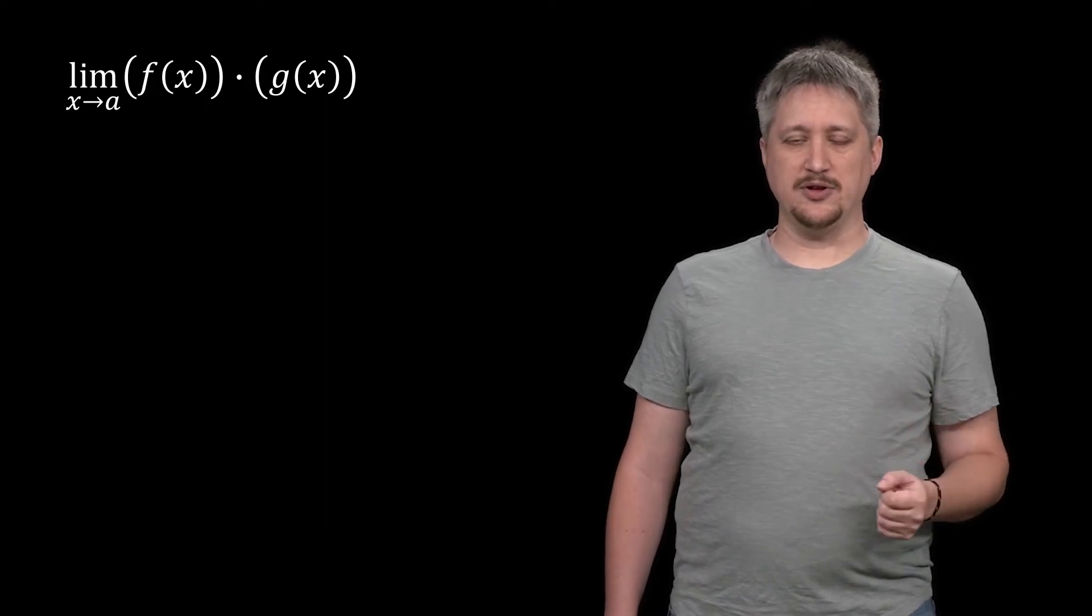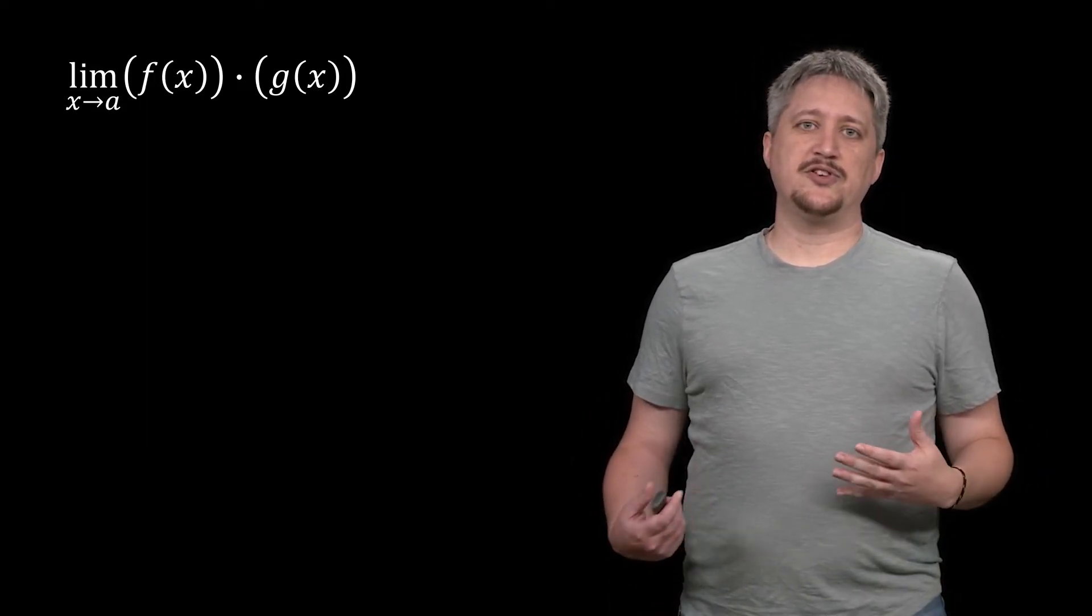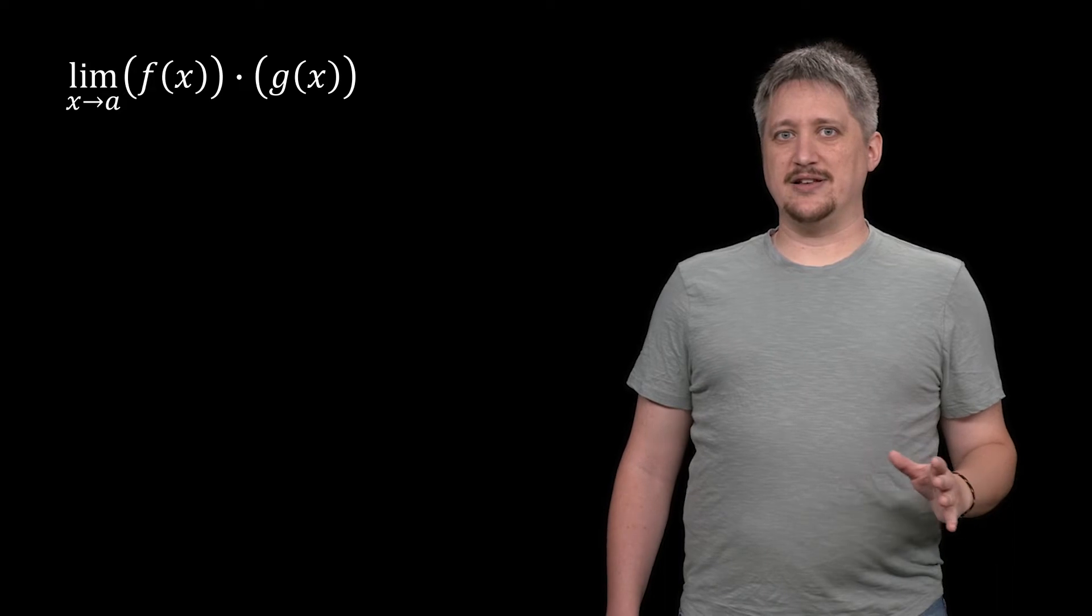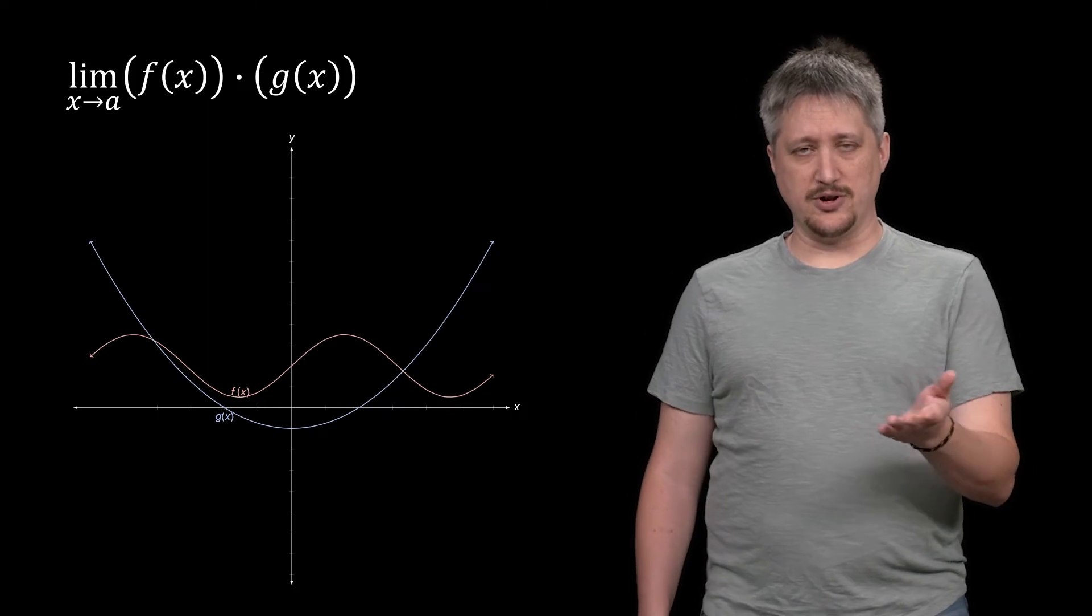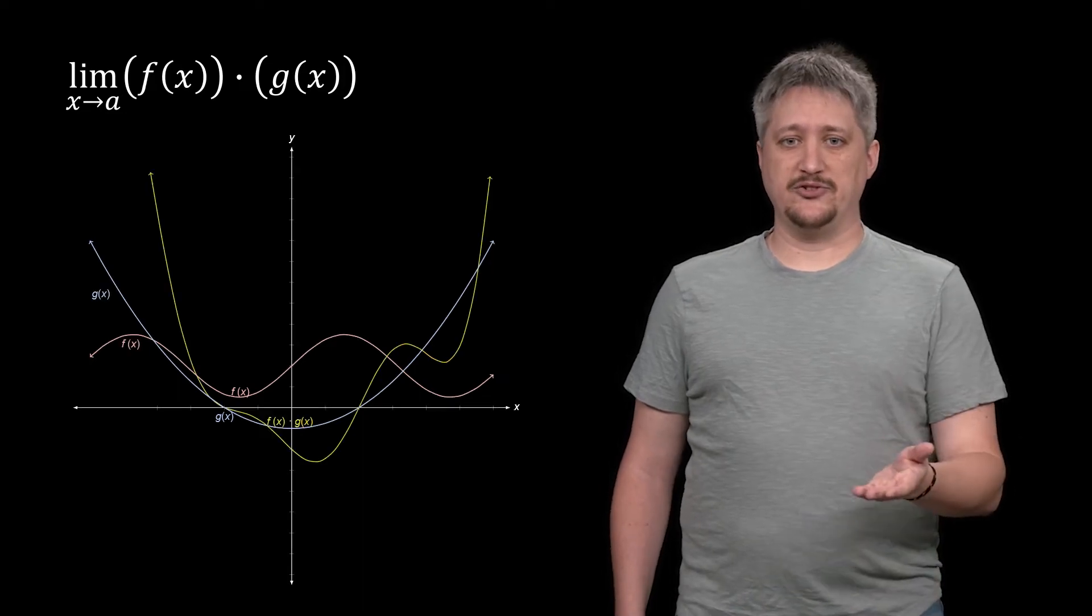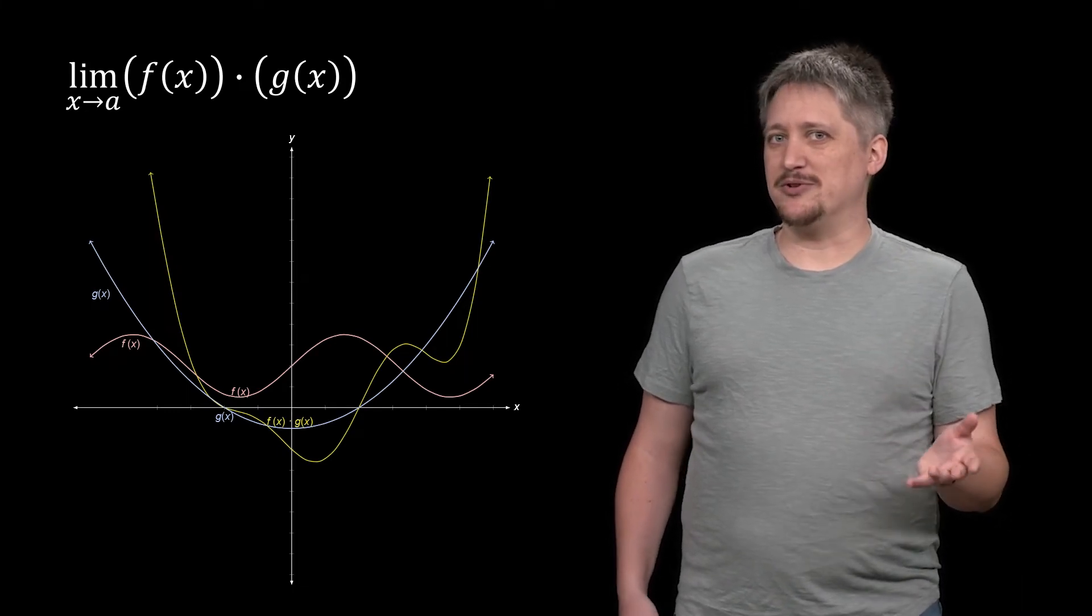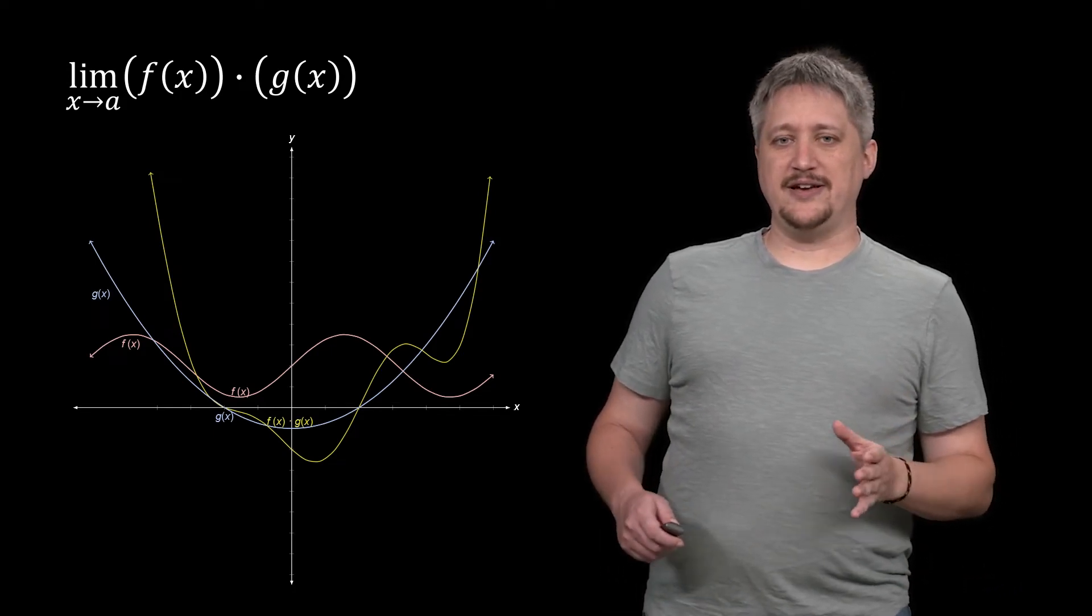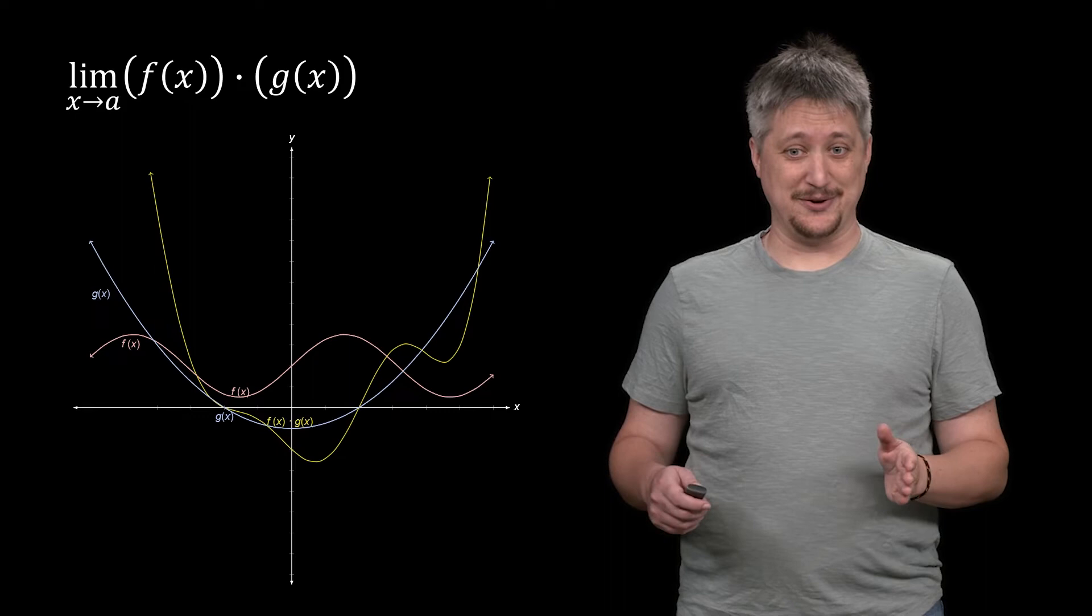Next we're going to look at the product. The product is our first sort of weird example because when you do a constant multiple you can think of it as just stretching, when you do sum or difference you can think of it as stacking stuff on top of each other, but multiplying gets a little strange because there's not as easy of a graphical intuition to see what happens.